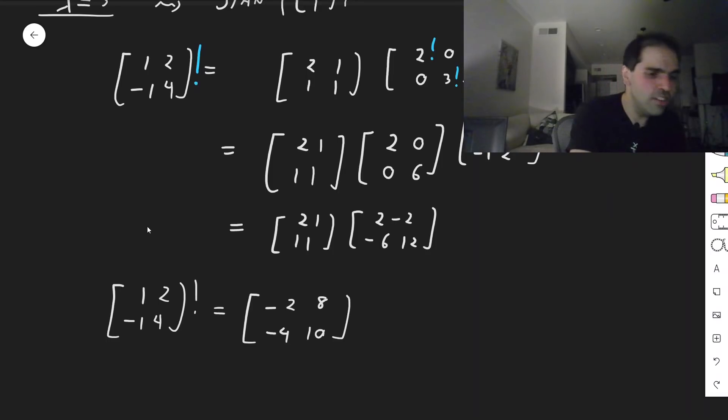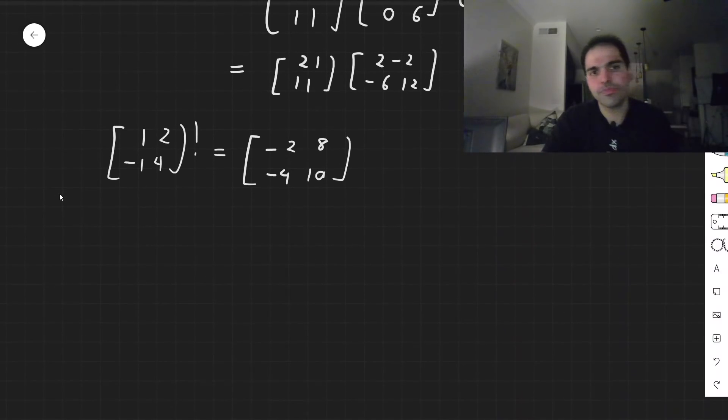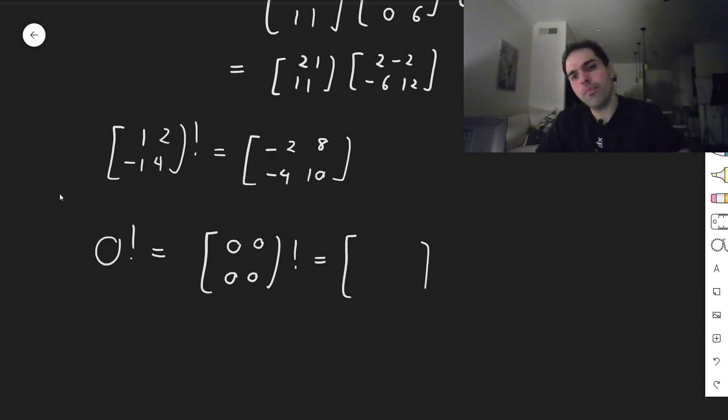Now this is all good, but we really need to check if it actually satisfies the properties that we want. And first of all, let's just quickly check this 0 factorial definition. Well, 0 factorial is [0, 0; 0, 0] factorial. And remember, for diagonal matrices, you just put the factorial in the diagonal entries. So [0!, 0; 0, 0!], and that becomes [1, 0; 0, 1], which is the identity.